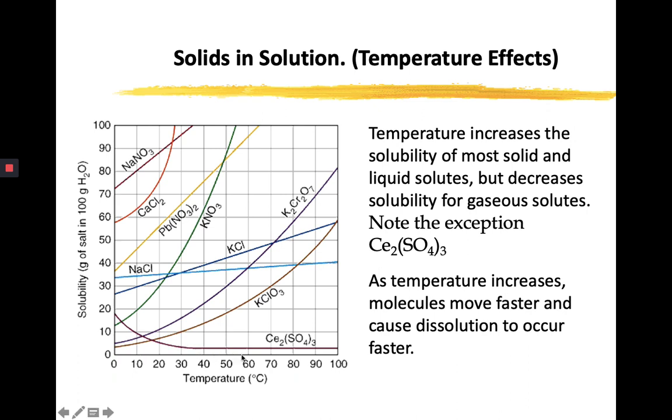So what this graph is trying to tell us is that as temperature increases, so does the amount of salt that can be dissolved in a particular solvent. You can see general trends for lead nitrate or for calcium chloride, so there is really an upward or even an exponential trend in terms of the solubility. So the higher the temperature, the greater the solubility because as temperature increases, molecules move faster and cause dissolution to occur faster. So the more collisions there will be for the solute and the solvent particles, then the more soluble your salt or the solute becomes.